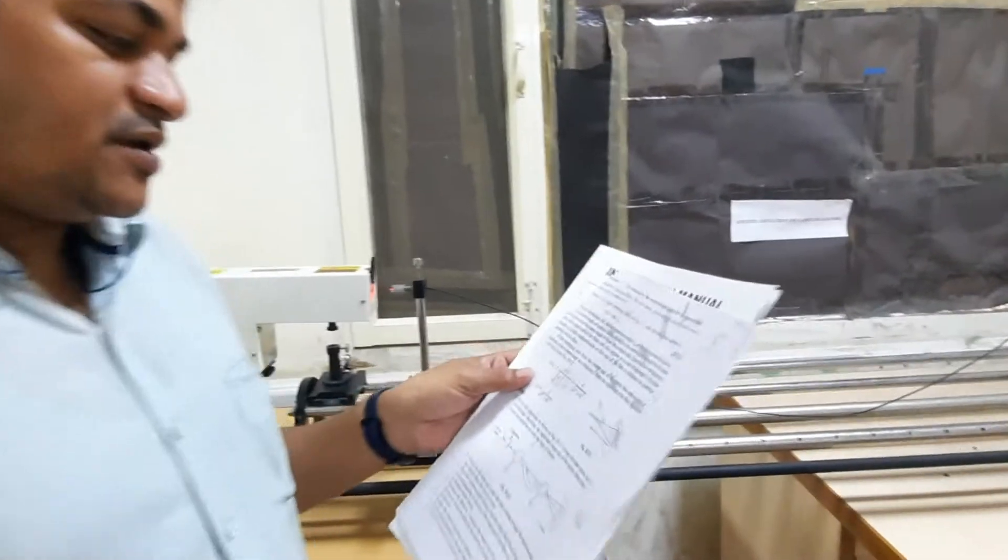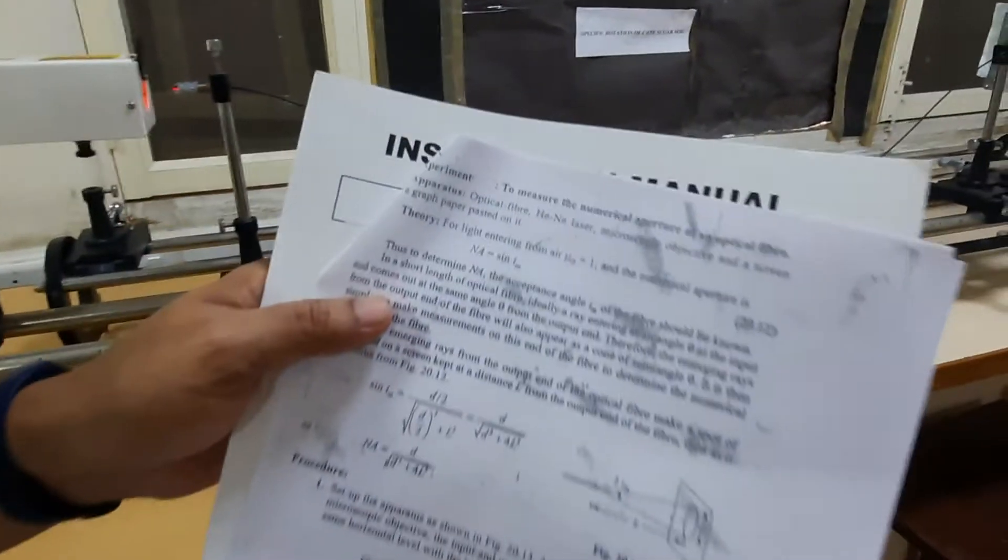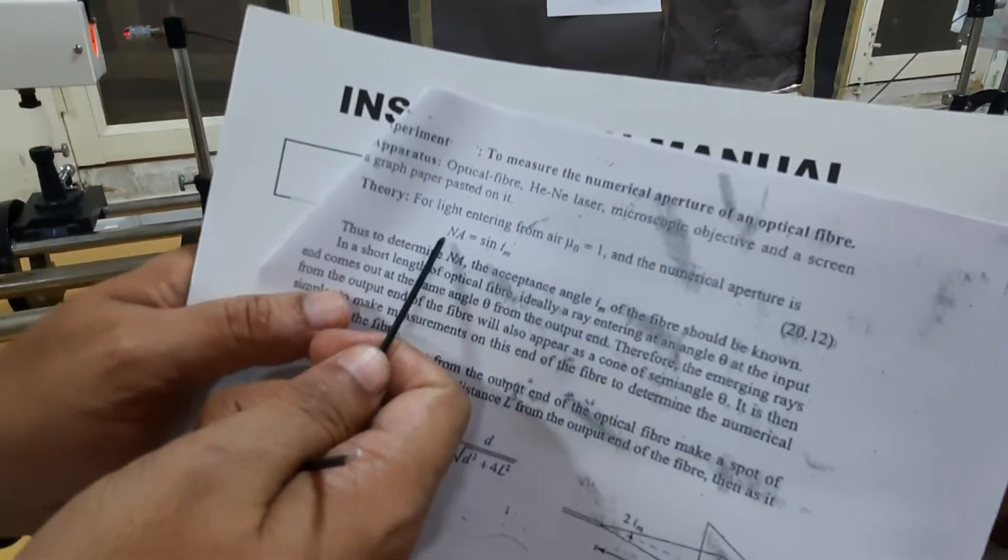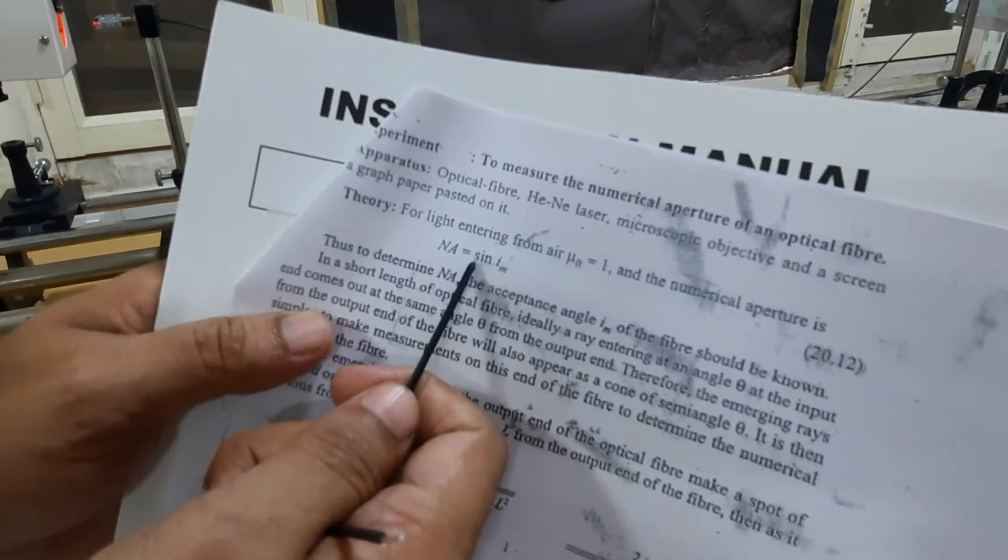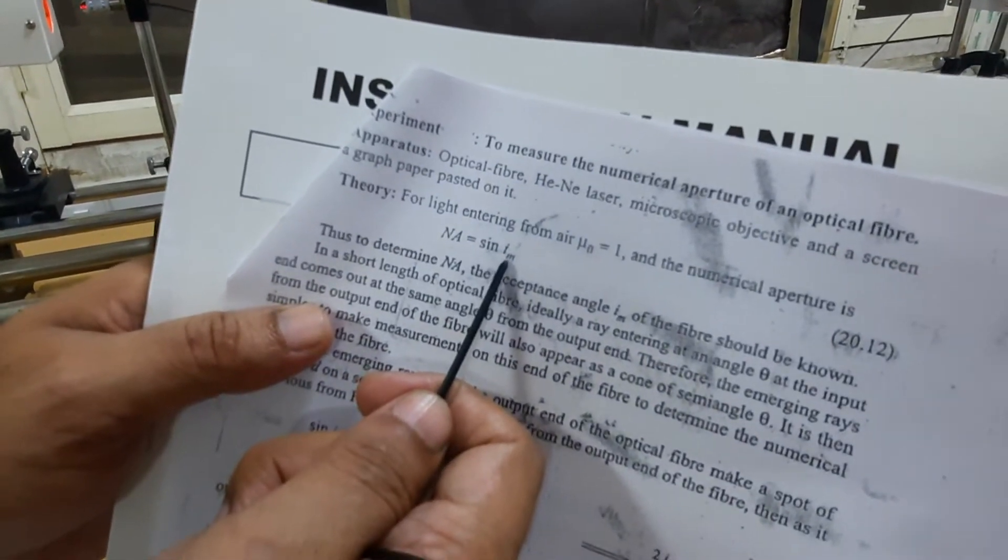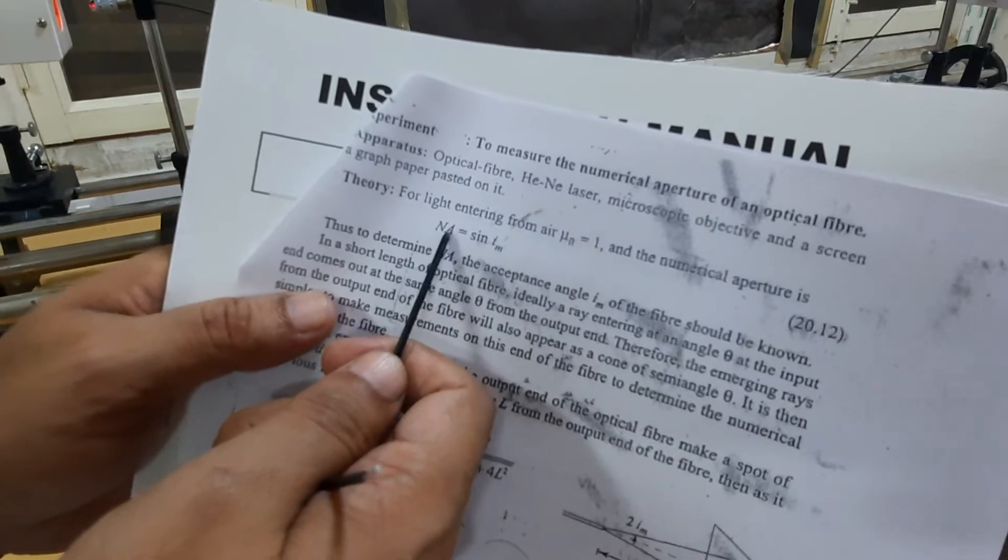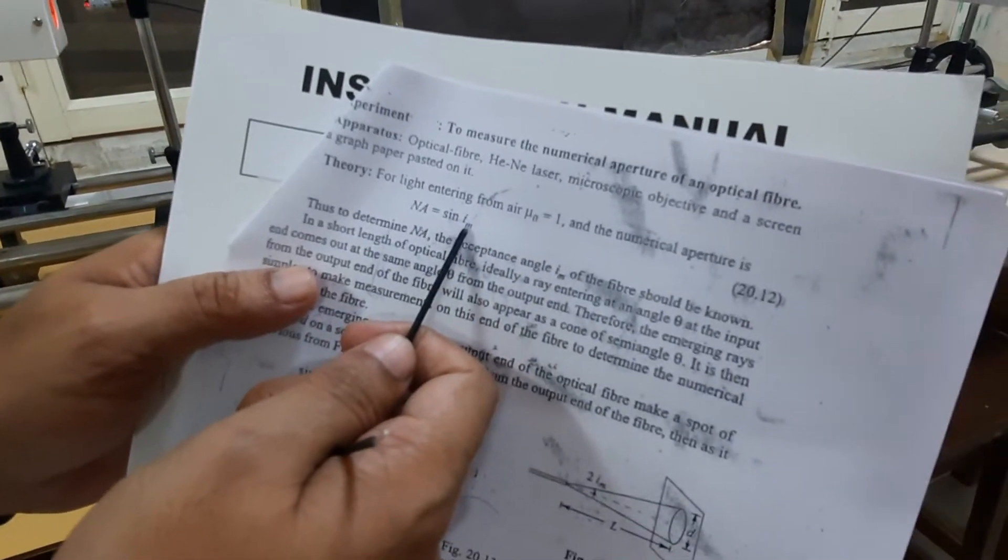What we are going to do is something like this. Here is the numerical aperture. The numerical aperture is related with the acceptance angle - numerical aperture is equal to sin of im. Im is this acceptance angle.